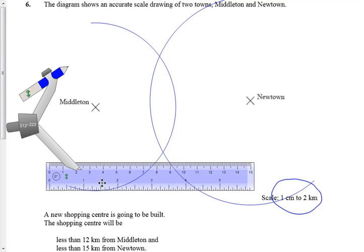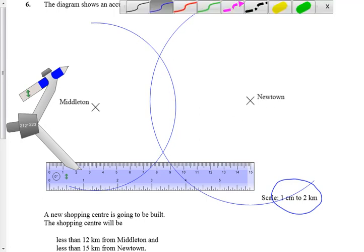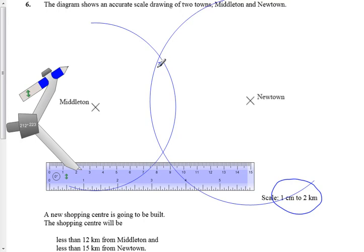So the shaded region where it can be built - well, it could be built anywhere in this region in the middle. So that's it.